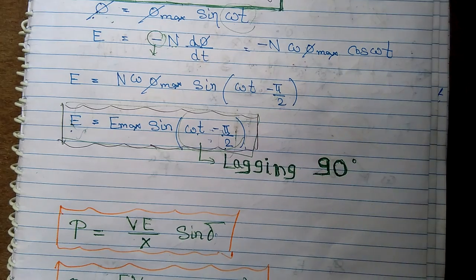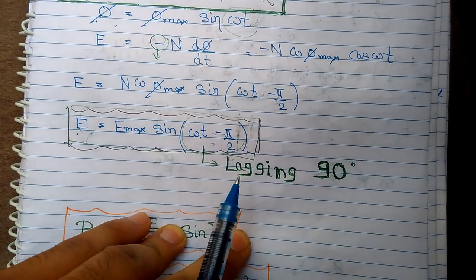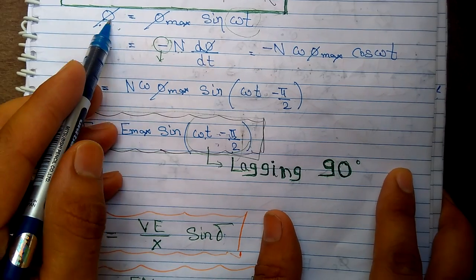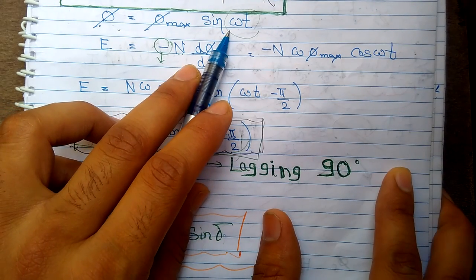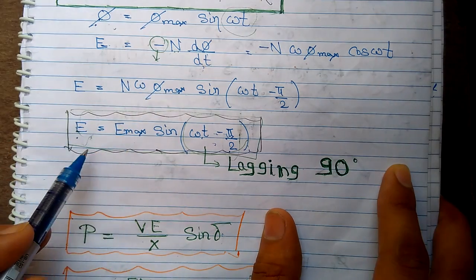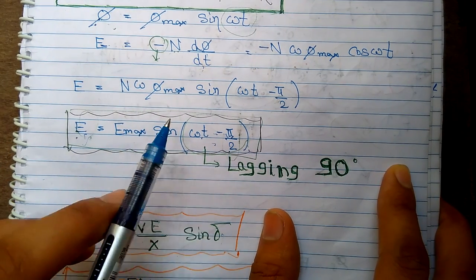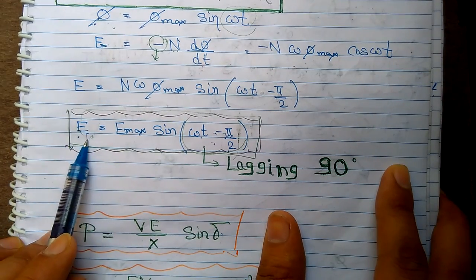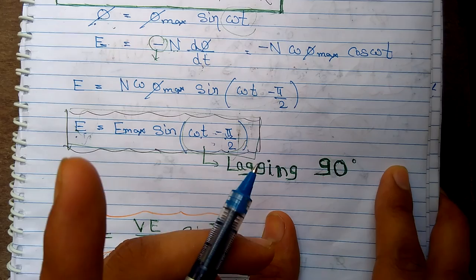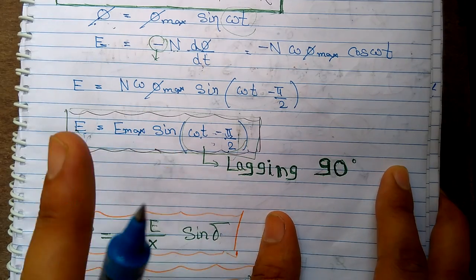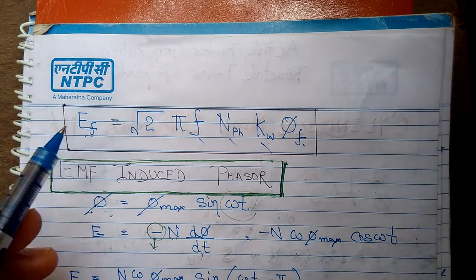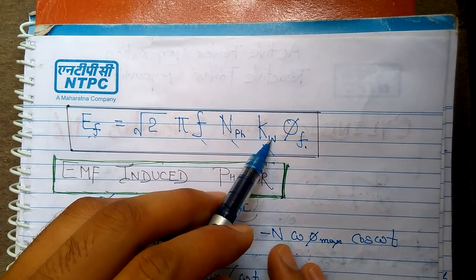As the rotor rotates, it produces a sinusoidally varying flux for the stator windings. If the flux is Φ = Φ_max · sin(ωt), then EMF induced is e = dΦ/dt, which gives e = E_max · sin(ωt − π/2). This means the EMF induced lags by 90 degrees to the field flux which is producing it — do not confuse this with armature flux. We have two MMFs here: armature flux and field flux. The magnitude of the induced EMF is E = √2 · π · f · N_ph · K_w · Φ, where K_w is the winding factor.